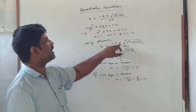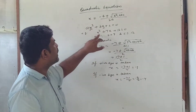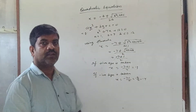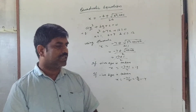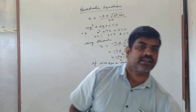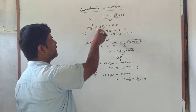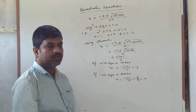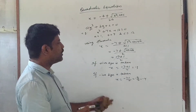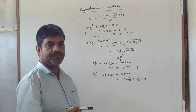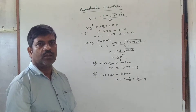There will be two possible values depending on whether we take the positive or negative sign. As we know, in a quadratic equation the highest power of the variable is 2, and the fundamental theorem of algebra says the number of solutions equals the highest power. Since the highest power is 2, it will have two solutions.